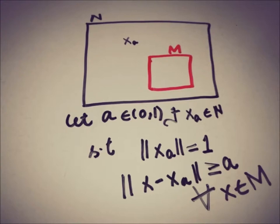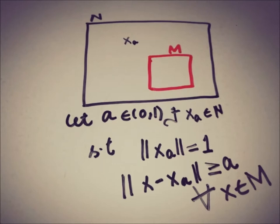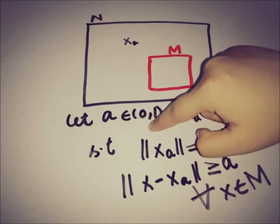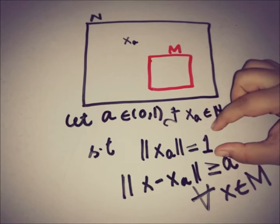So again, the statement of Riesz's Lemma: if we have a normed space and a proper closed subspace M, and we take a real number a in between 0 and 1, then there exists an element in N whose norm is 1 and whose norm of the difference with all elements in M is greater than or equal to that specific a. Let's start the proof.